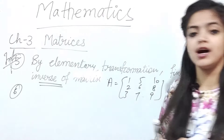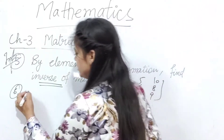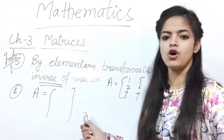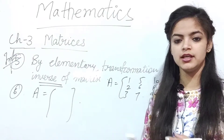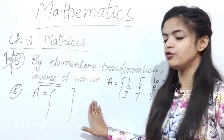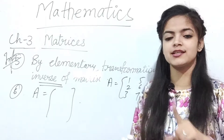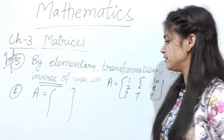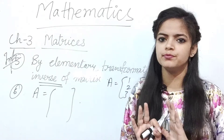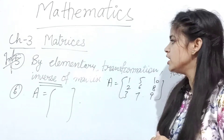That is the 6-mark question which is the most important. Next, another long question that can come is: represent the matrix A as the sum of a symmetric and skew-symmetric matrix. These are the two long-question topics. For short questions, it can be addition or multiplication of matrices — that is straightforward according to short questions.